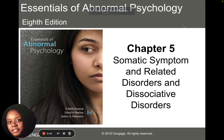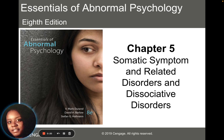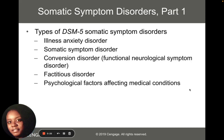Chapter 5 is about somatic symptom and related disorders and also dissociative disorders. Just like we discussed in Chapter 4, I'm going to go over the DSM criteria, but I'm not going to spend a lot of time on the nuances. I am going to talk about some different disorders that fall in this category — including illness anxiety disorder, somatic symptom disorder, conversion disorders, fictitious disorders, and any other psychological factors that affect medical conditions.